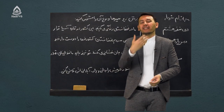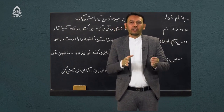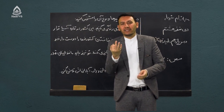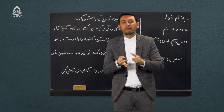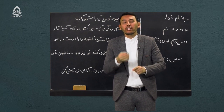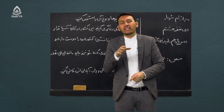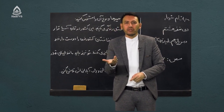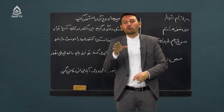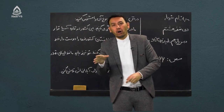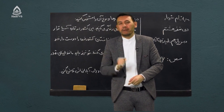ضمیر کلمه‌ای‌ست که جانشین اسم شود. هدف از آوردن ضمیر جلوگیری از تکرار اسم است. ضمیرها سه نوع است: یا ضمیرهای شخصی است، یا ضمیرهای مشترک است، و یا ضمیرهای اشاره هستند. ضمیرهای شخصی آن ضمیرهایی است که جانشین اسم انسان می‌شوند، مانند: من، تو، او، ما، شما، آنها — ضمیرهای ششگانه که در حوزه اشخاص بیان می‌شود.